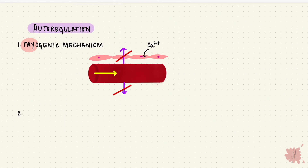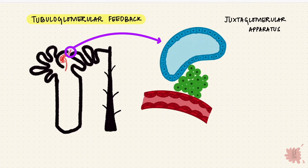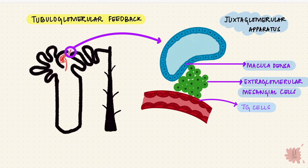The second mechanism is feedback from the renal tubule to the glomerulus, called tubuloglomerular feedback. This is mediated by the juxtaglomerular apparatus, which has three parts: the macula densa — modified cells of the distal convoluted tubule; the extraglomerular mesangial cells, which are outside the glomerulus; and the modified cells of the afferent arteriole, called the juxtaglomerular cells or JG cells. Together, these form the juxtaglomerular apparatus. The JG cells are the ones that produce renin.